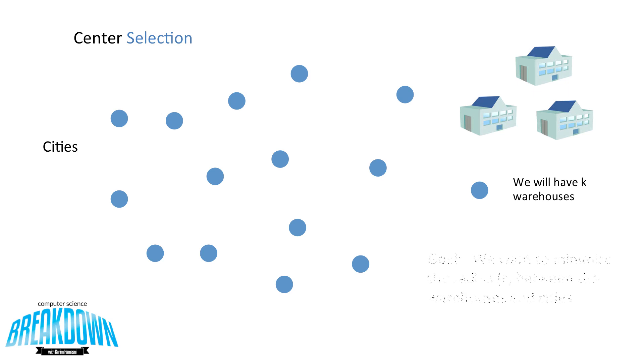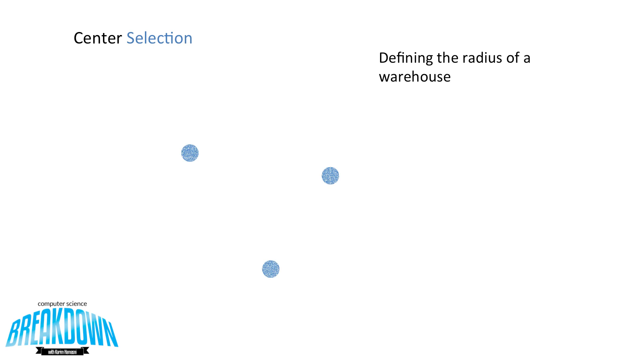So we'll have k warehouses, and the goal is we want to minimize the radius r between the warehouses and the cities so that the delivery trucks don't have to travel too far to deliver the goods. So now we want to define what it means to be the radius to a warehouse. Let's say we have these three cities and there is a city here where the warehouse is currently located. If we were to connect the cities to that warehouse, the longest line is the radius between the warehouse and the cities that it serves. So in this case, it would be this line here denoted by the arrow.